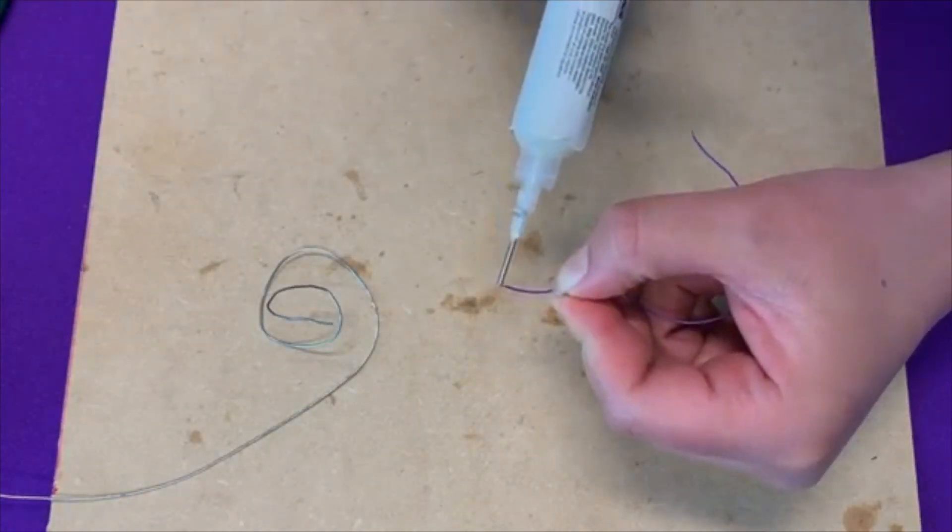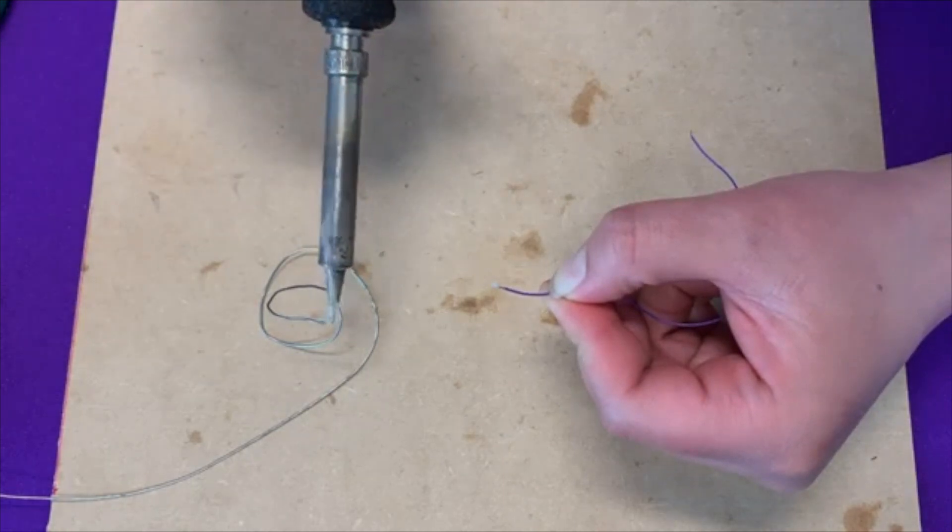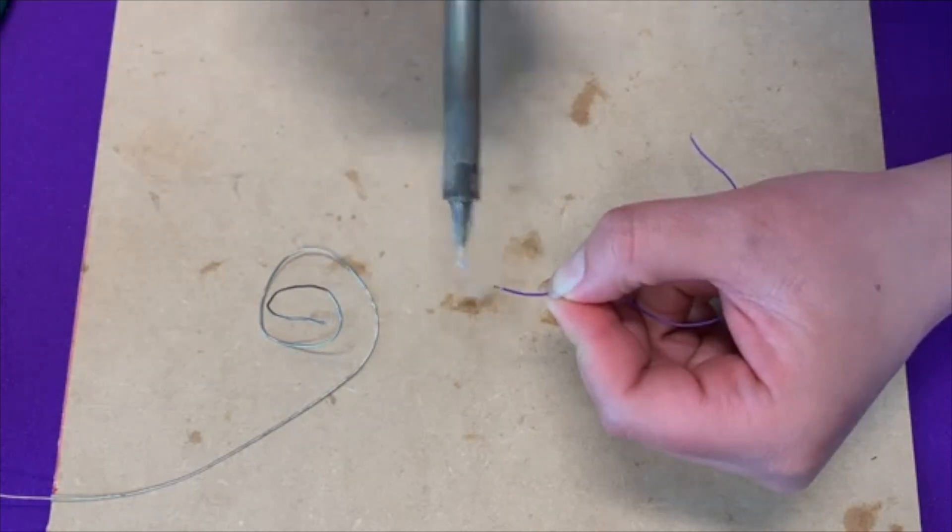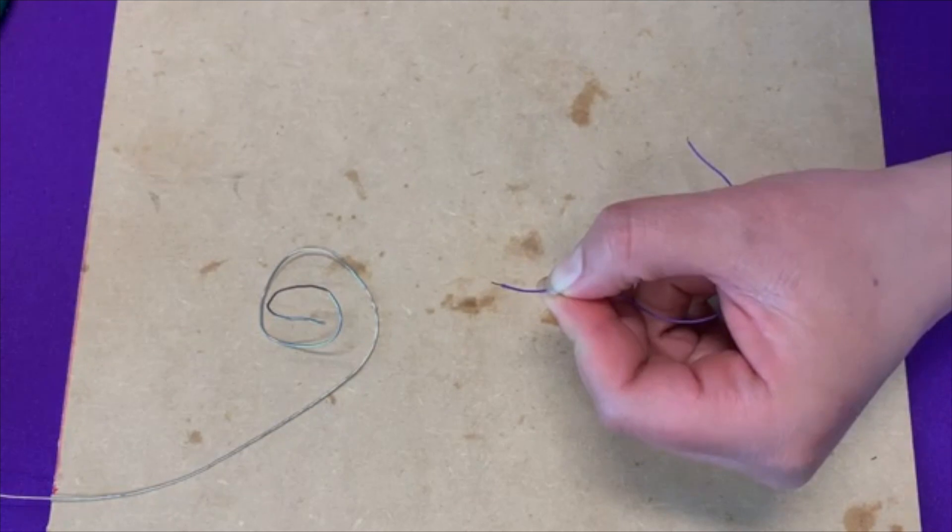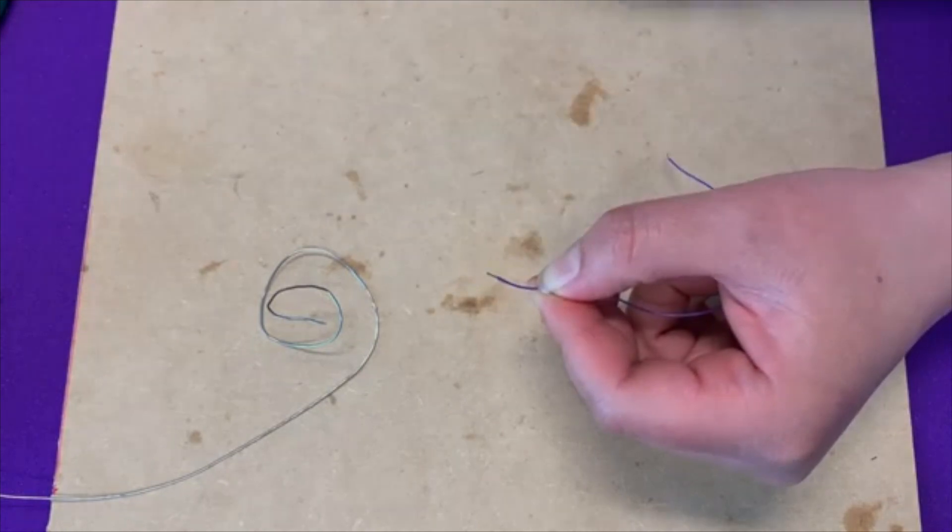Put a little dab of flux on the end of the wires. Grab our soldering iron, clean off the end of it, get a little bit of solder, and tin the end of the wire. Now if the wire is a little bit longer than a quarter of an inch, we can always trim the excess with our wire cutters.